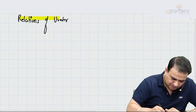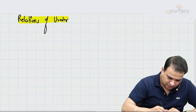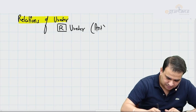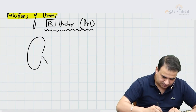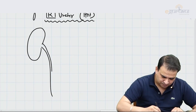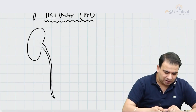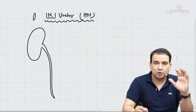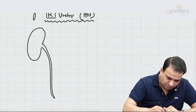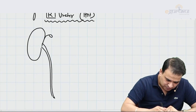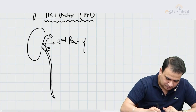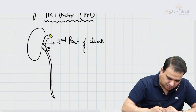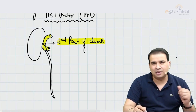Let's start with the right ureter anterior relations. The anterior relation of the right kidney close to the hilum was the second part of the duodenum, and that forms a relation here as well. So one relation is the second part of the duodenum, which is not only an anterior relation of the kidney but also a relation for the ureter.